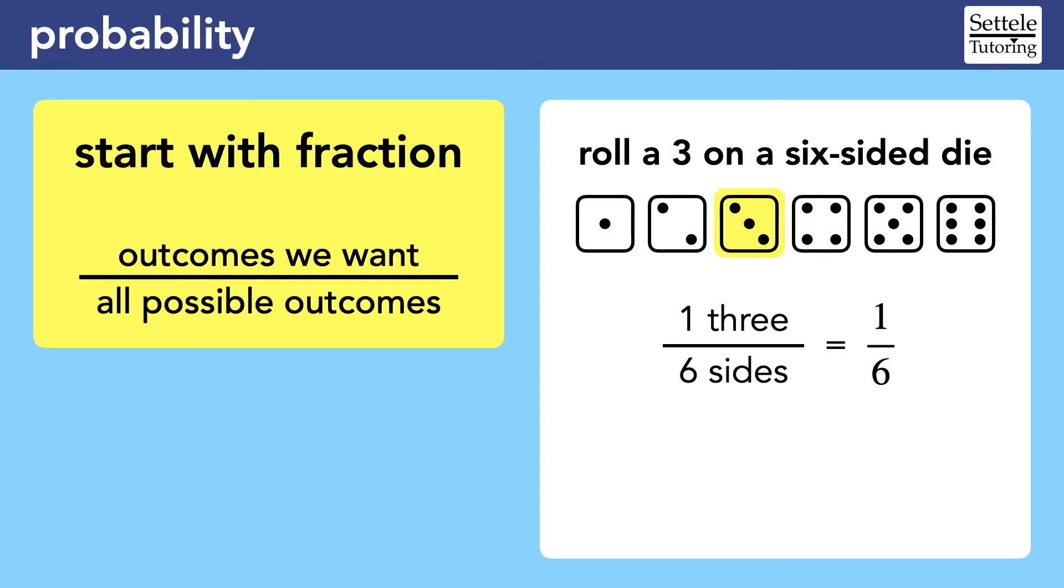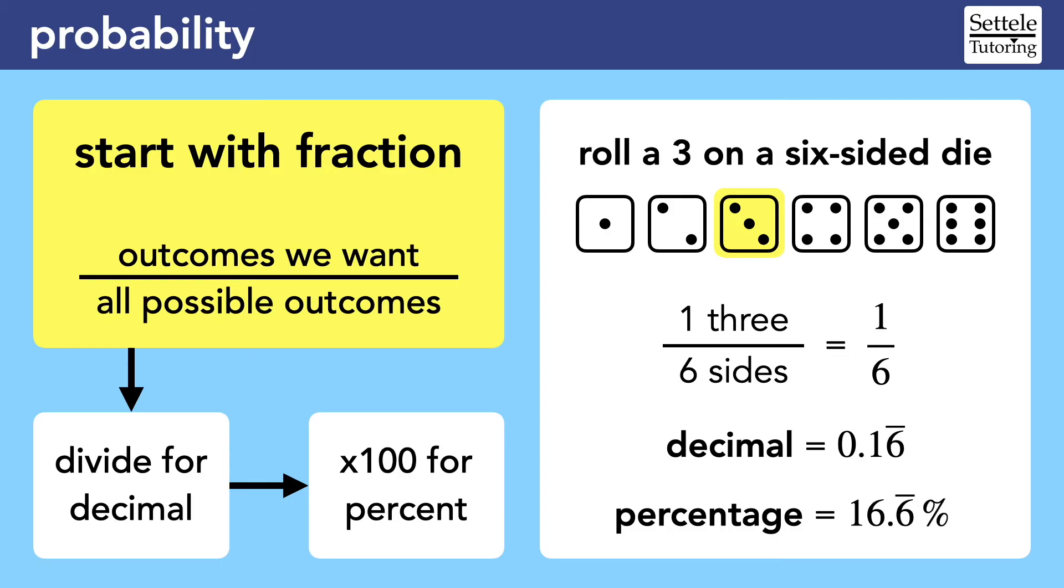Sometimes you'll need to express probability as a decimal or a percentage. It's easy to find the decimal if you start with the fraction, because you can just divide the numerator and denominator in a calculator. In this case, one divided by six is 0.16 repeating. Turning a decimal into a percentage is just a matter of multiplying by 100. In this case, 0.16 times 100 is 16.6 repeating percent.